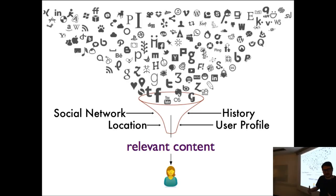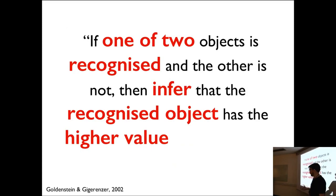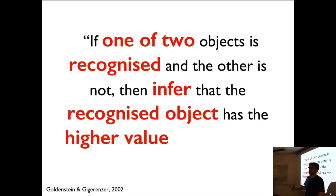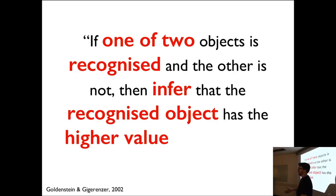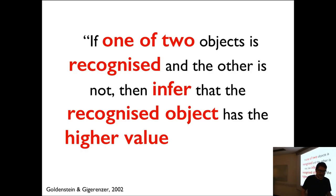One of the things we wanted to do was assess how people give value to content — how people look at content and decide whether to read it. That's when we found out about the recognition heuristic, which says: if you have two things presented to you, you recognize one and don't recognize the other, you're probably going to give higher value to the thing you recognize.